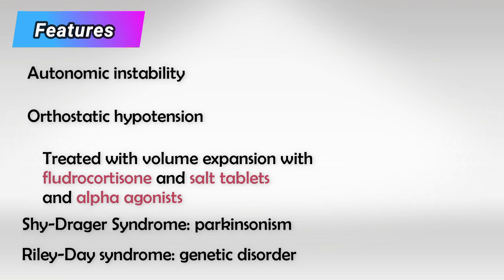To recap: Shy-Drager syndrome and Riley-Day syndrome both present with orthostatic hypotension as the main complaint, and they both cause autonomic dysfunction. Shy-Drager syndrome appears later in life and is caused by progressive Parkinsonism. Riley-Day syndrome appears early in life and is caused by an autosomal recessive disease.